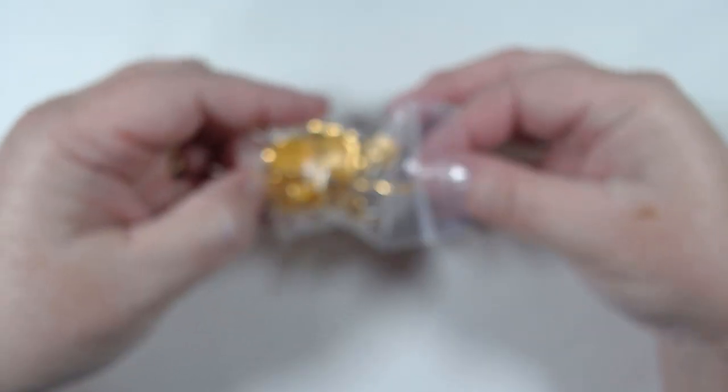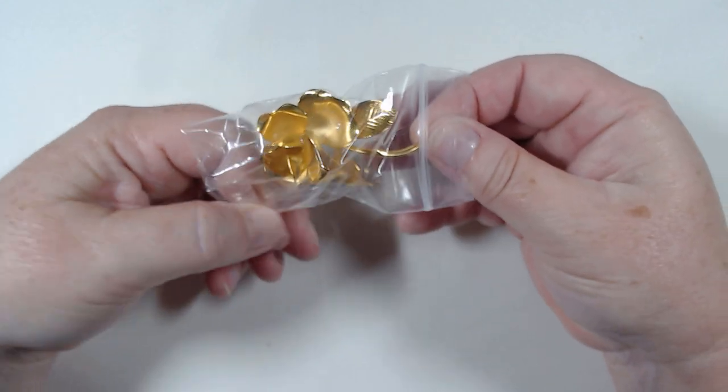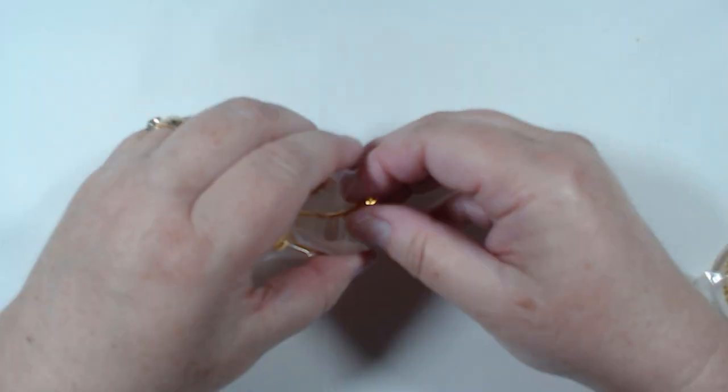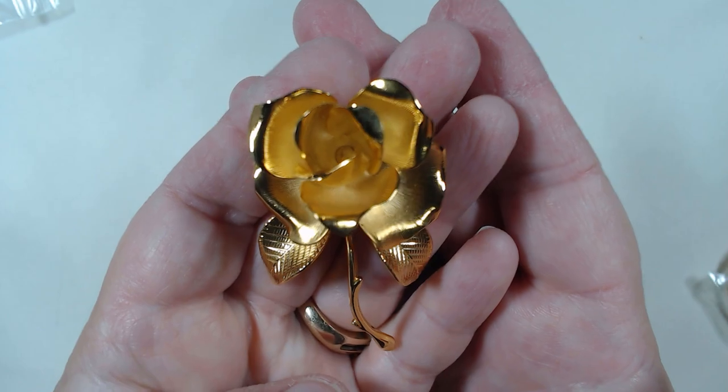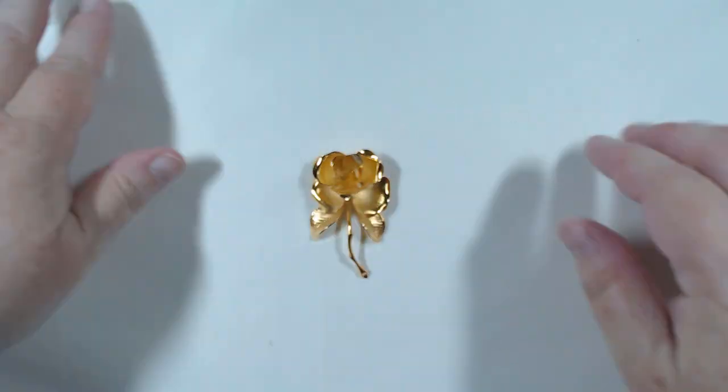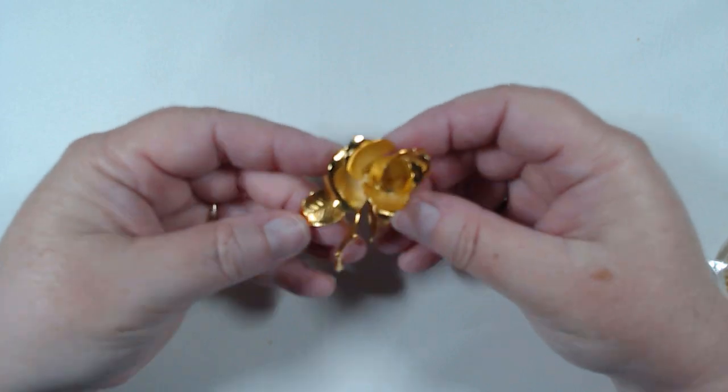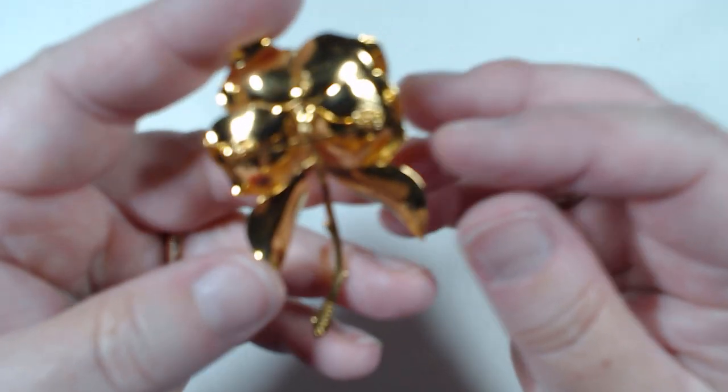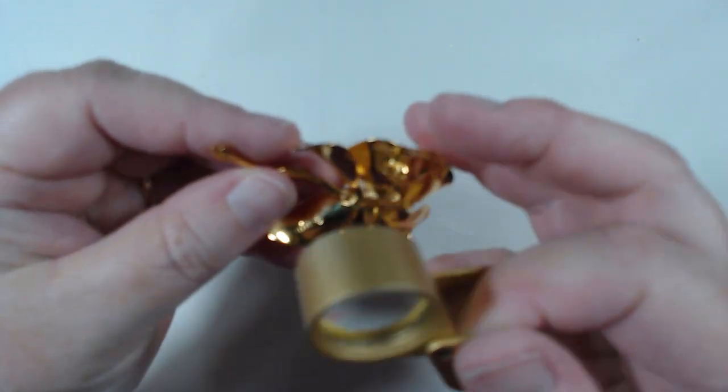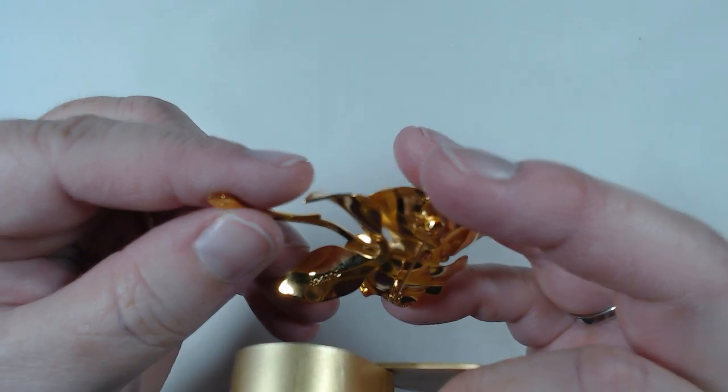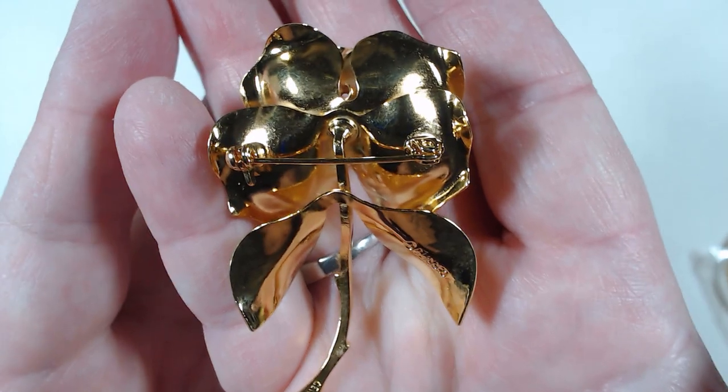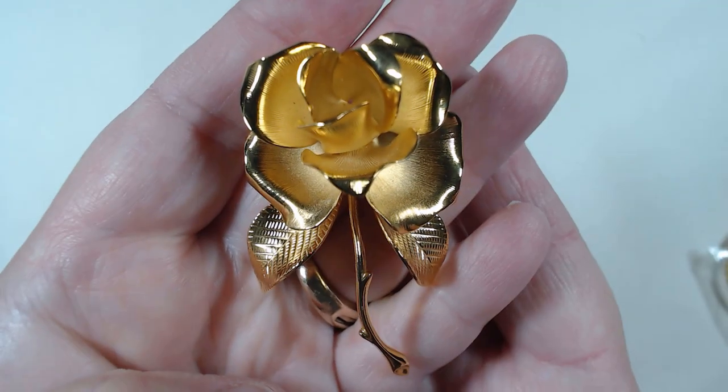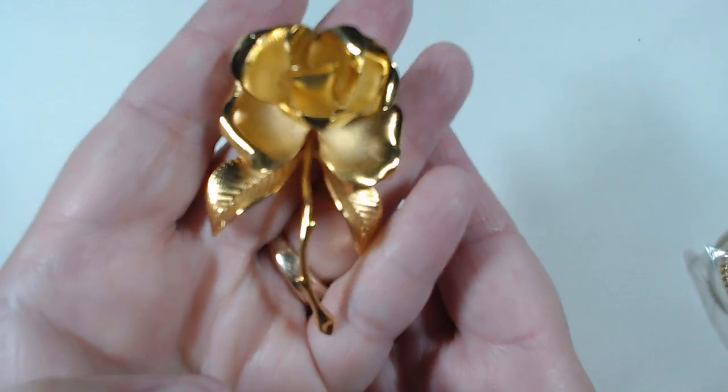We have another pin. This one is gold tone, it's a beautiful flower. Wow, look at that. That's gorgeous. Look, it sits on its own. That's beautiful. Here's the back, we have a mark. Cerrito. And the back is in beautiful shape. That's a beauty.